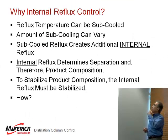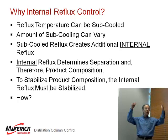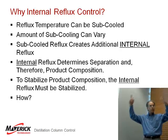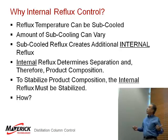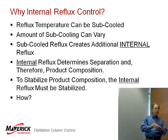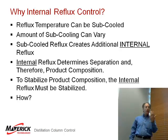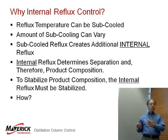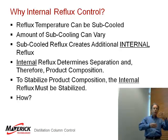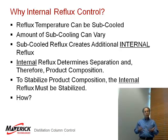Why internal reflux control? Reflux can be subcooled, and the amount of subcooling can vary. For example, if you have an air fan condenser and a rainstorm hits, your reflux temperature suddenly gets much cooler. Subcooled reflux has additional internal reflux because when it enters the tower, it's below its bubble point, so it takes heat to vaporize it. That heat comes from condensing vapor rising from the trays below, creating more internal reflux. The more subcooled the reflux, the more actual internal reflux you have — which is a disturbance that changes the vapor-to-liquid ratio and upsets composition.